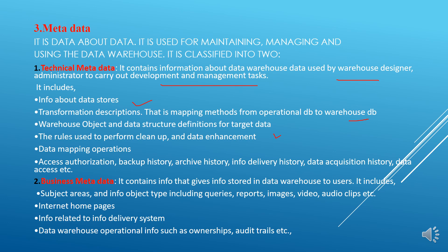Business metadata contains information that gives users insight into the data stored in the data warehouse. It includes subject areas, object types such as queries, reports, images, video or audio clips, and internet home pages, as well as information related to the information delivery system and data warehouse operational information such as ownerships and audit trails.